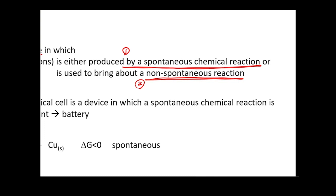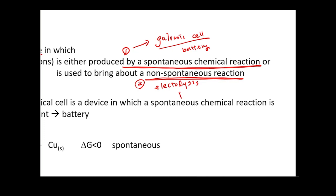The other thing is just the reverse — you can use electric currents to promote non-spontaneous reactions. The first type is the galvanic cell, or simply the battery. The second type, where you use electric currents to bring about non-spontaneous reactions, is called electrolysis or electroplating.